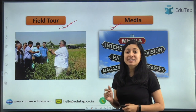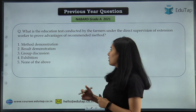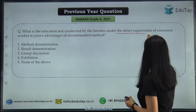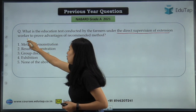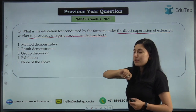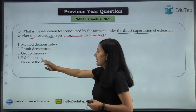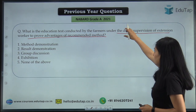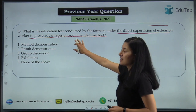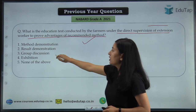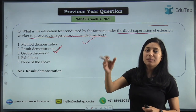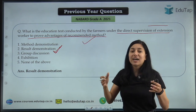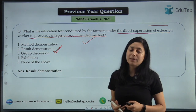So that was all about the different types of extension education methods. Now moving on to the question: what is the education test conducted by farmers under the direct supervision of an extension worker to prove advantages of recommended methods? Options were method demonstration, result demonstration, group discussion, exhibition, none of the above. We have discussed that when the farmer is doing something under the direct supervision of an extension worker to prove the advantage of a recommended method, that is your result demonstration. So the correct answer is result demonstration.